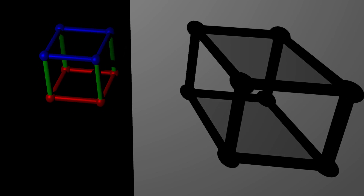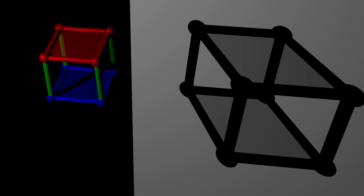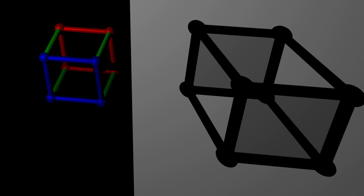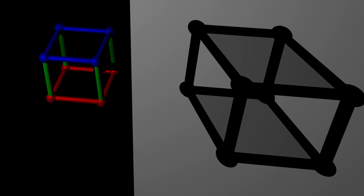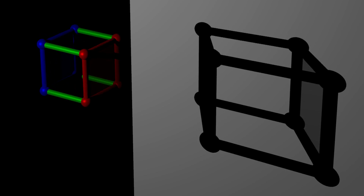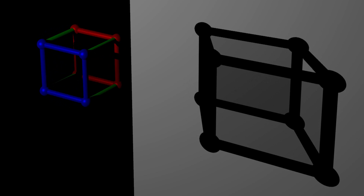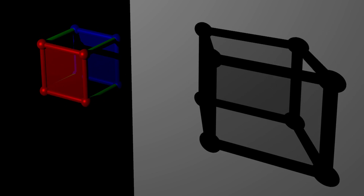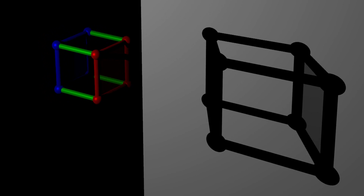Let us return to the example of the rotating three-dimensional cube. Whereas the three-dimensional cone was white, the three-dimensional cube has sections that are red, sections that are blue, and sections that are green. Notice how the shadow changes as we move the position of the light.